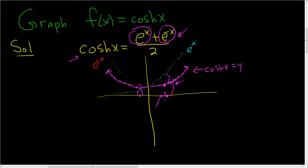So just a neat way to think about the graph. It's the average of e to the x and e to the negative x. Really, really, really nice function. I hope this helps someone out there.